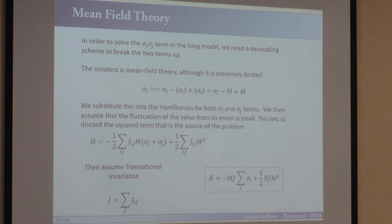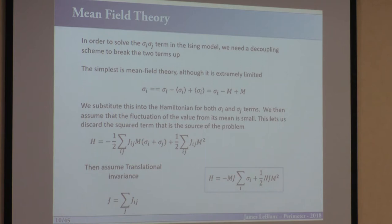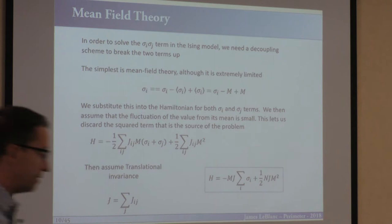I'll review what mean field theory is, in order to later talk about dynamical mean field theory. Mean field theory is a basic tool to decouple when you have two operators. The fact that we have two operators in a Hamiltonian means evaluation is not the same for every lattice site, so when we write down a partition function we can't just raise it to the power of n. Mean field theory is the simplest scheme to rectify that — you take the spin value, add and subtract its mean, and expand assuming the deviation from the mean is small.